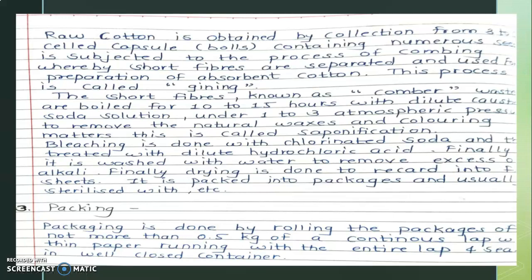Bleaching is done with chlorinated soda solution and then treated with dilute hydrochloric acid. Finally, the cotton is washed with purified water to remove excess alkali. Drying is then performed, after which the cotton is packed into packages and usually sterilized.